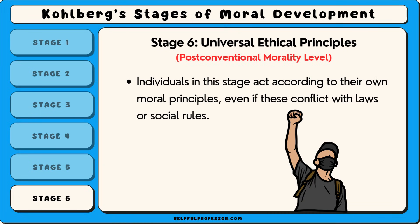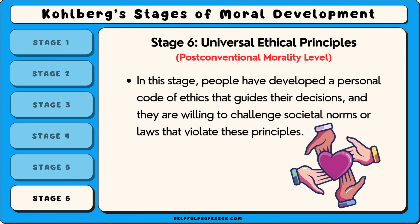Individuals in this stage act according to their own moral principles, even if these conflict with laws or social rules. For instance, someone might risk punishment to stand up against an unjust law because they believe in the greater moral principle of equality. In this stage, people have developed a personal code of ethics that guides their decisions, and they are willing to challenge societal norms or laws that violate these principles.